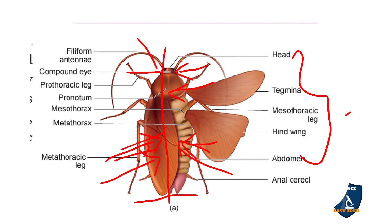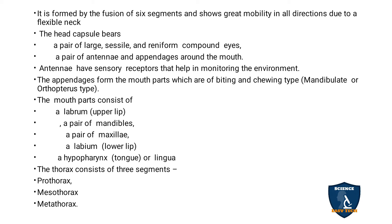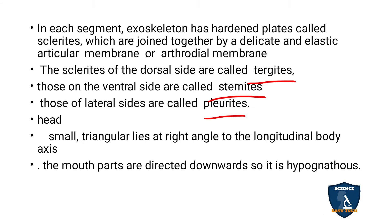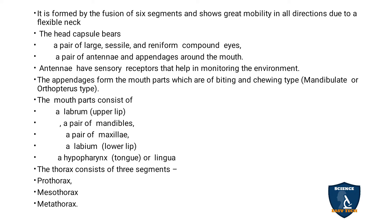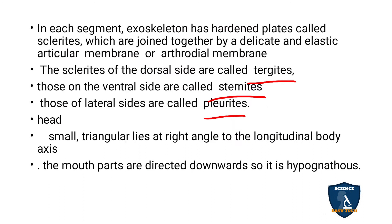The neck portion below the head, where six segments are fused, is called the cervical or neck region. The head capsule is the outer covering of the head. It has a pair of compound eyes and a pair of antennae.